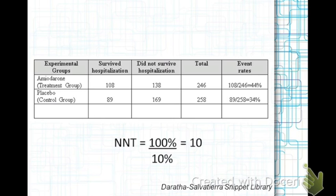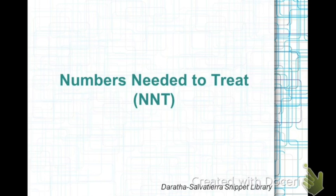An NNT of 10 means for every 10 patients treated, we can expect one improved outcome. In this example, that outcome is hospitalization survival.